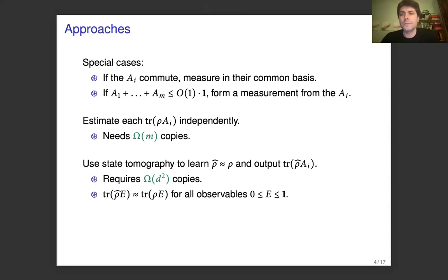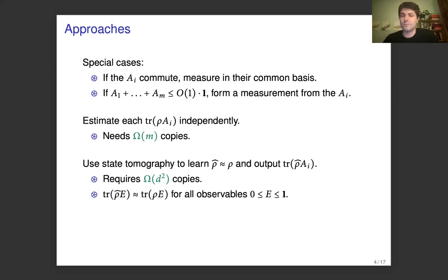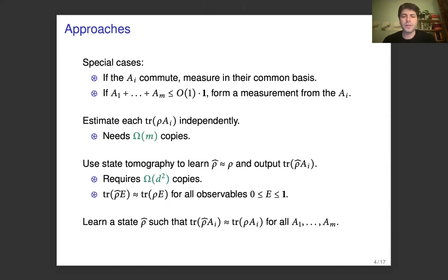We can try to learn the whole state rho using our copies of rho, and we can learn an estimate that is epsilon-close in trace distance, which is similar to just learning the distribution to epsilon accuracy in total variation. But this will require d squared copies of rho in the quantum case. Furthermore, this method is a bit overkill in that it gives accurate estimates for the probabilities of essentially all observables between 0 and 1, not just the ones a1 to am. So ideally, what we would like to do is to learn a hypothesis state rho-hat such that trace(rho-hat * ai) is close to trace(rho * ai), but only for all of the events a1 to am.